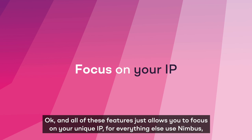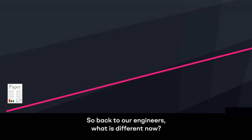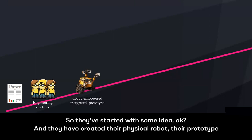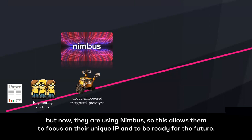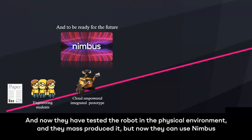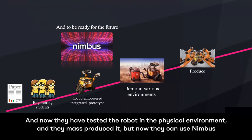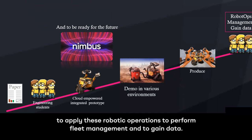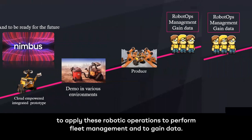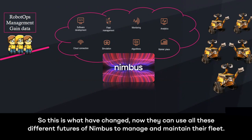All of these features allow you to focus on your unique IP — for everything else, use Nimbus — and this shortens time to market. Returning to our engineers: they start with an idea, create a physical prototype, but now they use Nimbus to focus on their unique IP and be ready for the future. They test in the physical environment, mass-produce the robot, and then use Nimbus to apply robotic operations, perform fleet management, and gain data to manage and maintain their fleet.